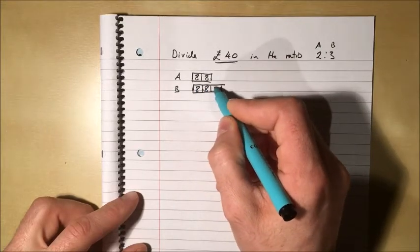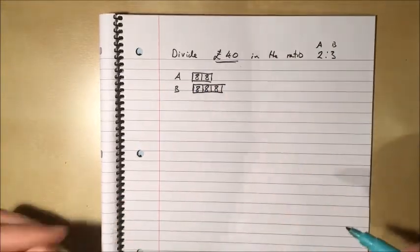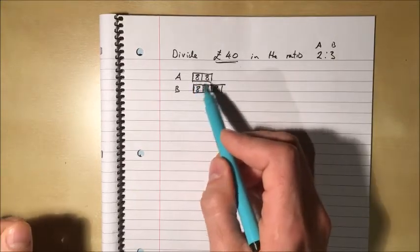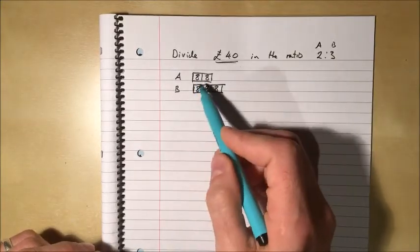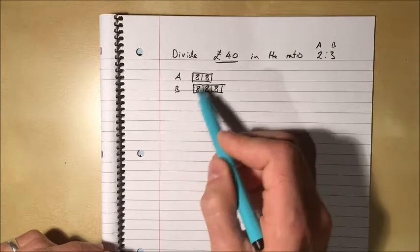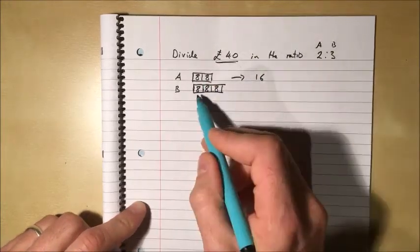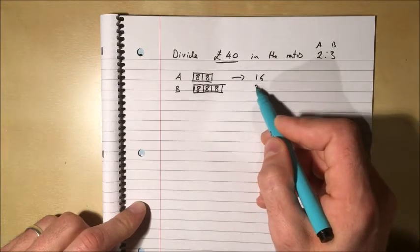The key is person A and person B don't get the same amount, but each share is the same amount. So £40 gets split evenly between five shares. So that's £8 in each share. That means person A gets two lots of eight, which is £16. Person B gets three lots of eight, which is £24.